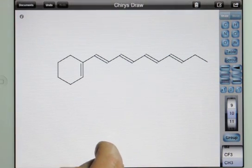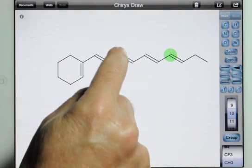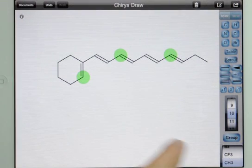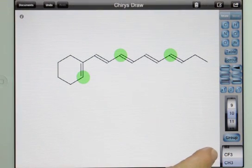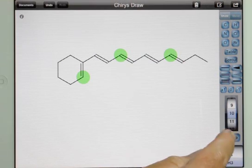Add functional groups by highlighting where to add them, choosing the group on the group wheel at lower right, and touching the group button.